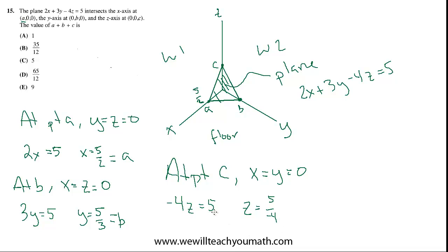And now it's just a matter of answering their question. Because we've now located A, B, and C. They want to know what is A plus B plus C. So I think we're just going to have to add some fractions here. We have 5 halves plus 5 thirds minus 5 fourths.